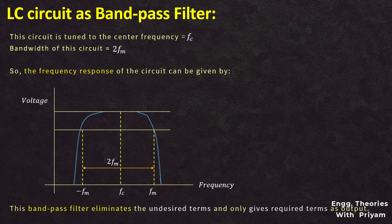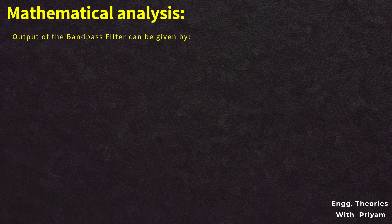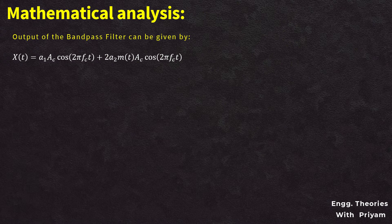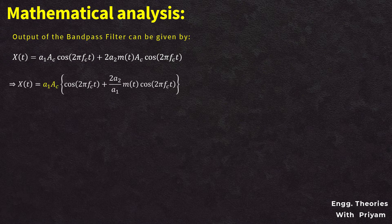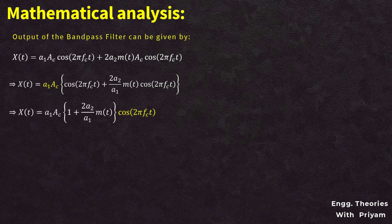As the output is passed through the bandpass filter, the LC tuned circuit eliminates the undesired terms and gives only the required terms as output. The output of the bandpass filter is: x(t) = a1·AC·cos(2πfc·t) + 2·a2·m(t)·AC·cos(2πfc·t). Taking a1·AC as a common factor, this becomes: x(t) = a1·AC·[cos(2πfc·t) + (2·a2/a1)·m(t)·cos(2πfc·t)]. Taking cos(2πfc·t) common gives: x(t) = a1·AC·[1 + (2·a2/a1)·m(t)]·cos(2πfc·t).